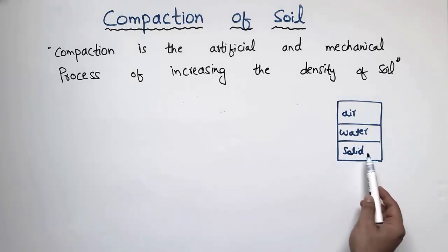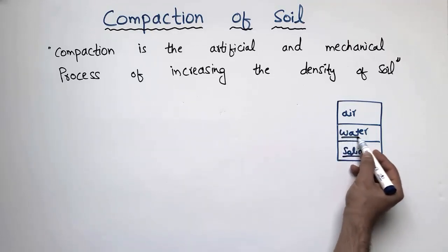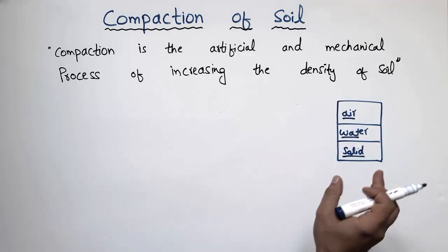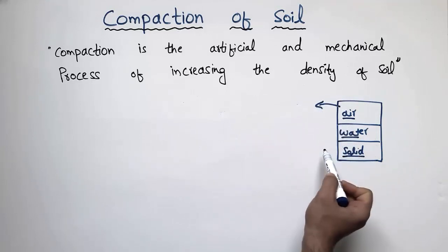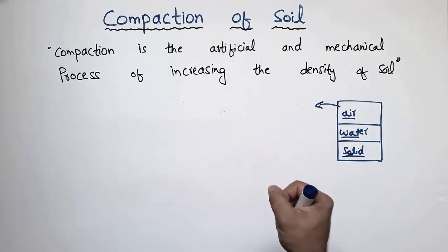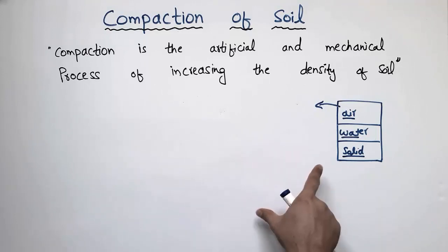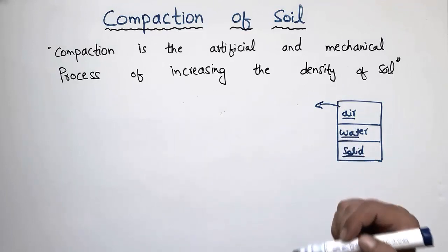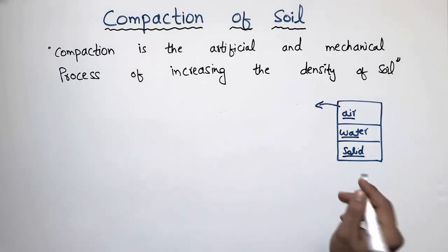Consider this is any soil mass — there is a phase diagram of the soil which has three main components: the solid mass of the soil, the water content present in the soil, and the air content present in the soil. In compaction, we want to remove the air from the voids of the solid mass in order to increase the density of the soil mass, so it can resist more load without any settlement.